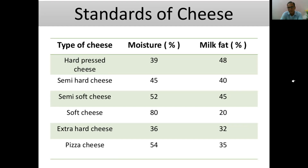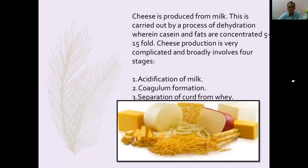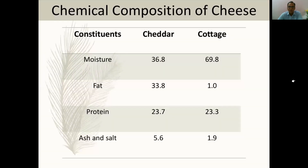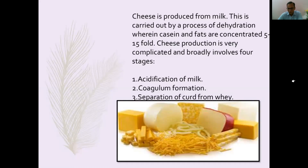Cheese is a very big sector. It is produced from milk through a process of dehydration where casein and fats are concentrated 5 to 15-fold. Cheese production is very complicated and broadly involves four stages: acidification of milk, coagulation formation, separation of curd from whey, and then ripening of the cheese.